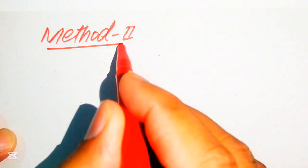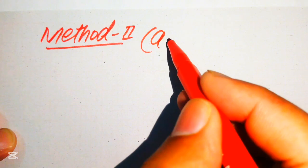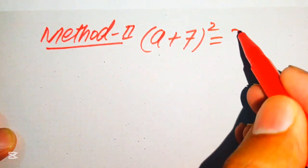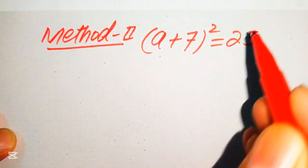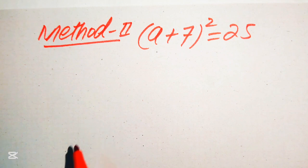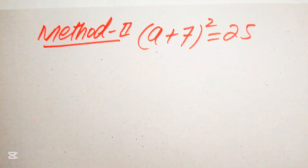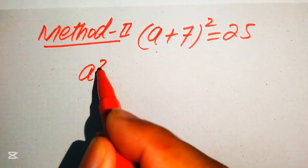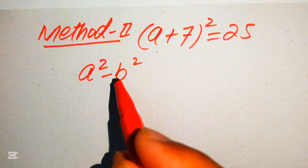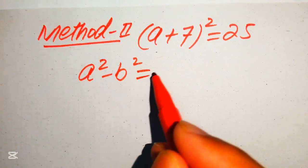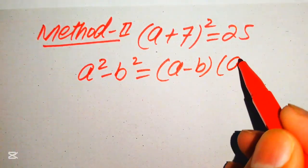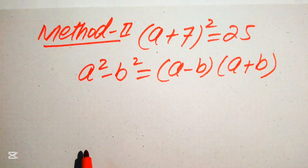In Method 2, we use the difference of squares formula: a² − b² = (a − b)(a + b).